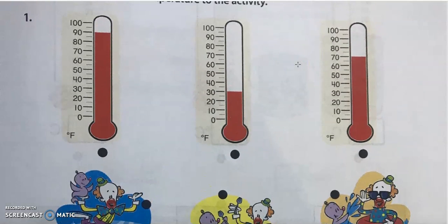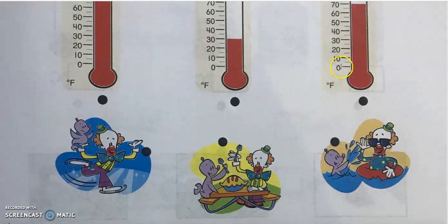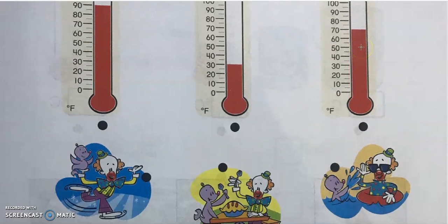The third thermometer, it's about 70 degrees Fahrenheit and that's about 20, 21, or 22 degrees Celsius. So it's cool, not cold, but I think it's pretty cool weather, probably autumn like fall temperature. So it's a good weather to go on a picnic. They went on a picnic, 70 degrees Fahrenheit.